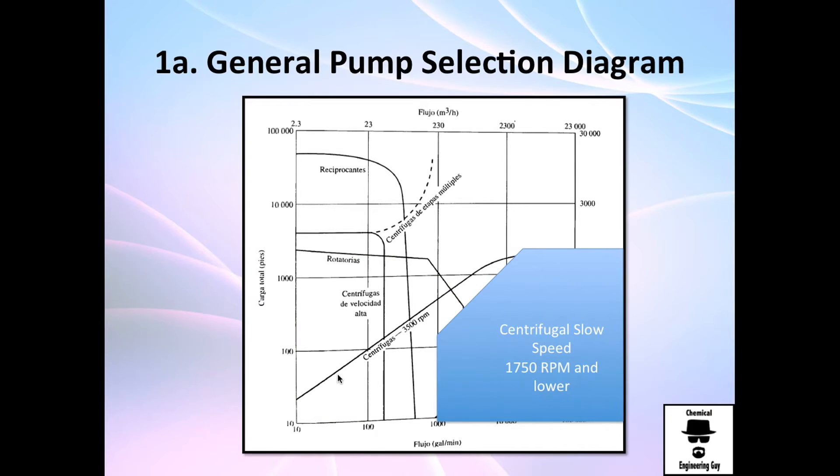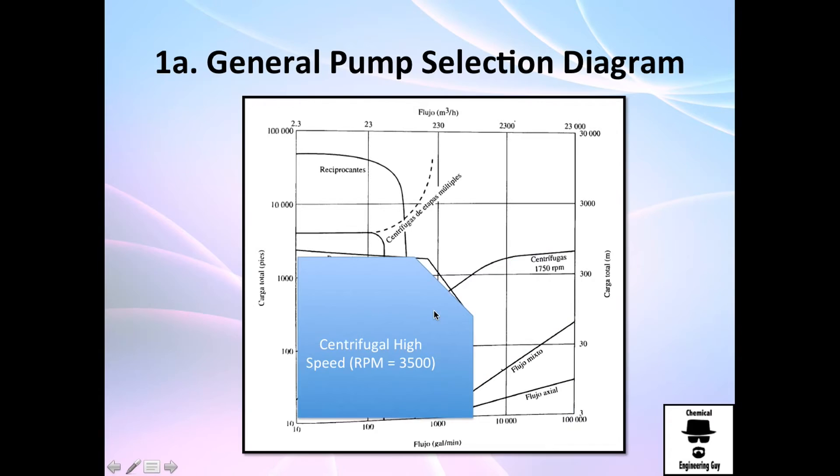You have this section, which is centrifugal pumps at slow speeds, 1,750 revolutions per minute. And what I mean with these revolutions per minute is essentially of the motor and the impeller.